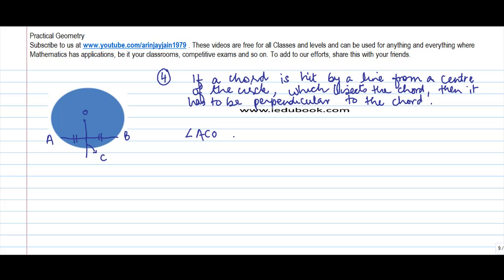Angle ACO is equal to angle OCB is equal to 90 degrees. So what this theorem says is that if there is a line from the center of the circle which bisects the chord into two equal parts, then this angle has to be 90 degrees.